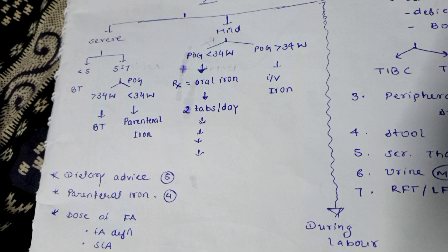For mild to moderate cases with gestation less than 34 weeks, we give oral iron — two tablets per day, compared to one tablet in prevention. After one month, if hemoglobin increases by one gram percent, we continue oral iron. If not, we check patient compliance. Patients taking iron tablets will have black-colored stools, so we check stool. Many patients are non-compliant due to GI irritation, nausea, vomiting, and metallic taste.